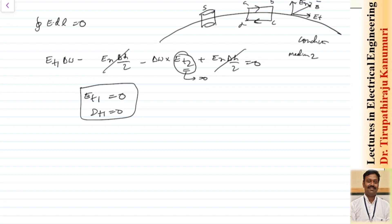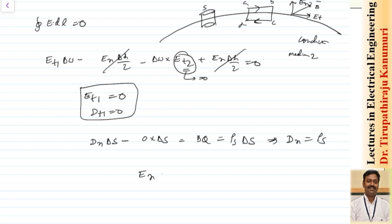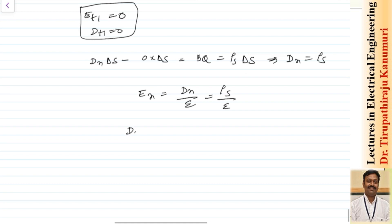For the normal component, Dn times delta s minus 0 (since the normal flux density inside the conductor is zero) equals delta q equals rho s times delta s. Therefore the normal component Dn equals rho s, and En equals Dn divided by epsilon, which equals rho s divided by epsilon.